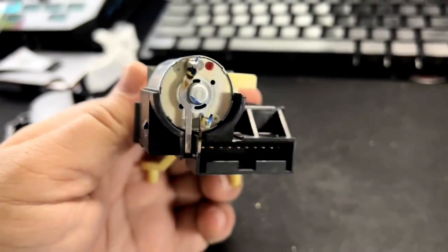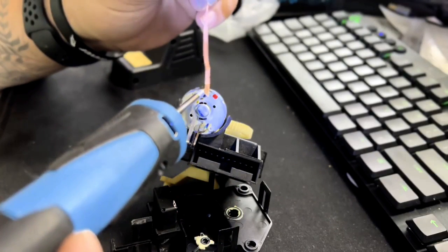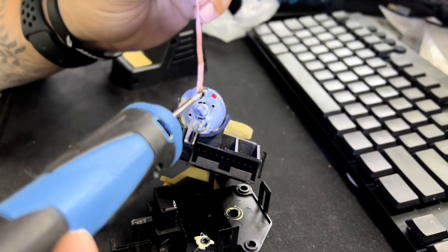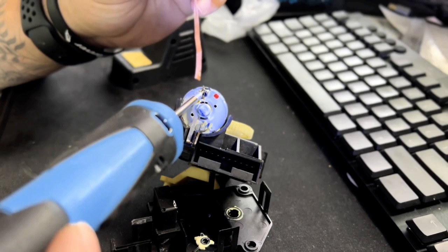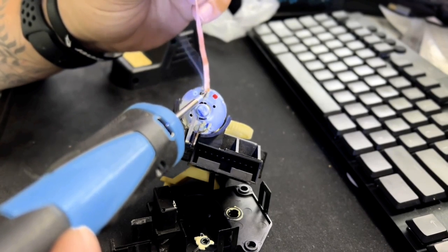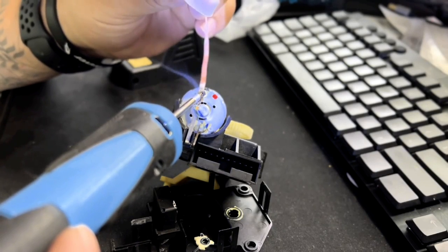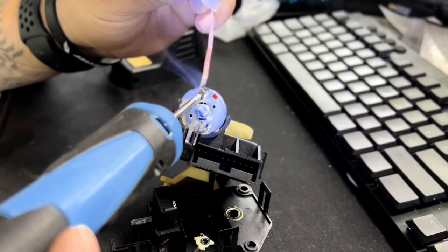And this is our servo motor here. So I'm going to take a soldering iron, and if you have it, use some soldering wick to soak up the old solder. Otherwise, just go ahead and let it melt and let it fall over the place. Whatever works for you.